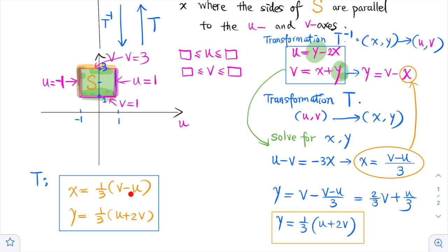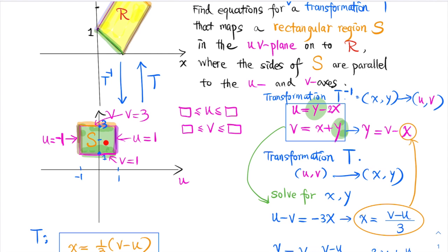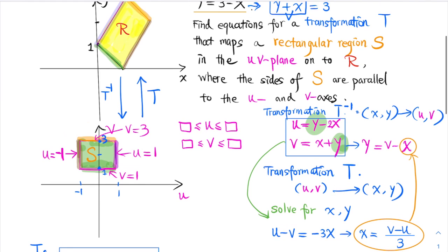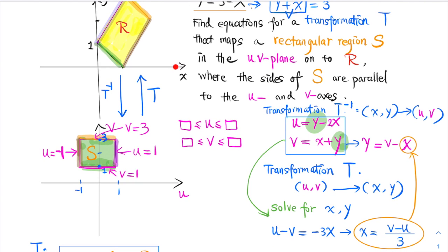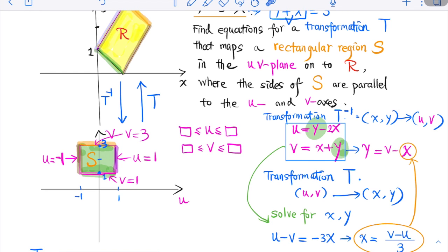This is one possible transformation that maps region S on the UV plane to region R in the XY plane.